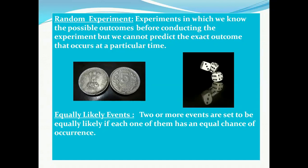Next is equally likely events. Two or more events are said to be equally likely if each of them has an equal chance of occurrence. If we consider a coin, the possibility for a head and a tail to appear as a result is equal, so this is considered equally likely. Also, if a die is considered, each side has a different number appearing only once, so there is no special advantage to any side. Such events are called equally likely events.